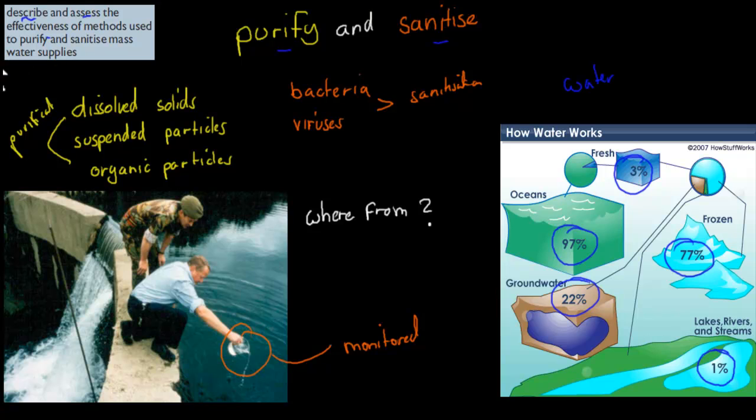So we have to talk about, first of all, how do we purify and sanitize mass water supplies. So we have to describe that process, and we also have to assess the effectiveness. We have to talk about, is it effective? Are there signs that it's not effective? And we have to make our overall judgment at the end. So say yes or no it's effective, and why we think that is the case.